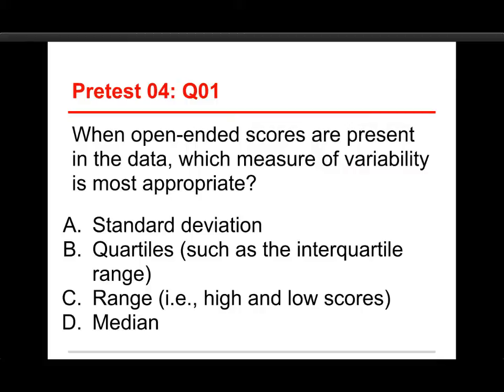The first question is: when open-ended scores are present in the data, which measure of variability is most appropriate? The choices are standard deviation, quartile such as the interquartile range, the range or the high and low scores, or the median. The answer to this one is B, the quartile such as the interquartile range.